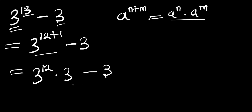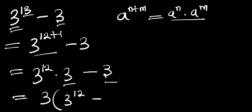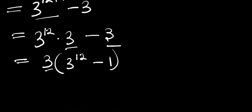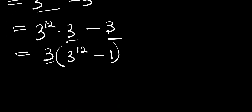We can factor out 3, because we have it in both terms. That means we are going to have 3 times (3^12 minus 1), since dividing 3 by 3 gives us 1.